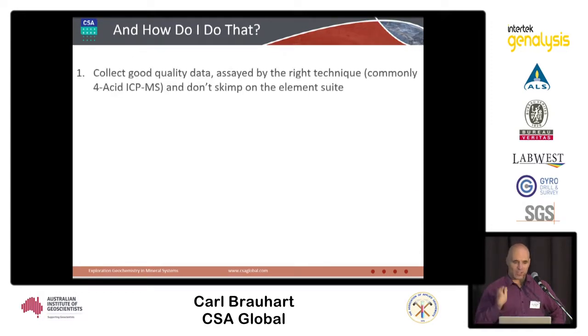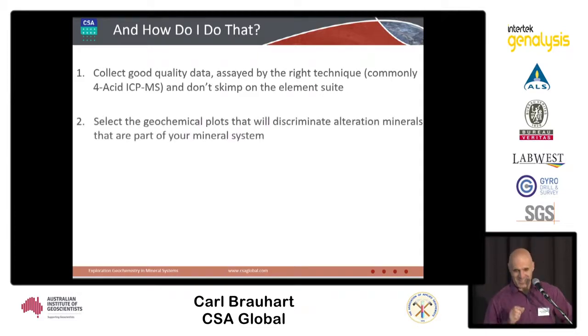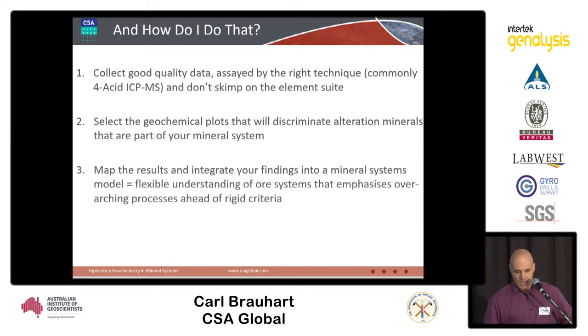So how do you do that? Collect good quality assay data, assayed by the right technique - very commonly acid ICP-MS. Don't skimp on the element suite - you'll use them all. Beethoven could not have written his symphonies if you'd left him without half of his notes. Select the geochemical plots that will discriminate alteration minerals that are part of your mineral system - you've got to be adaptive and work out what's going to pull out the key relationships. Map the results and integrate your findings into a mineral systems model - a flexible understanding of an ore system. Now it's beer time.